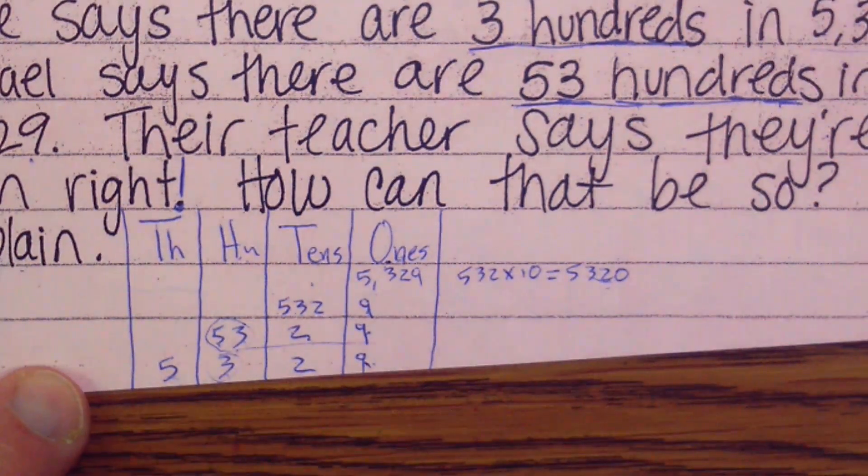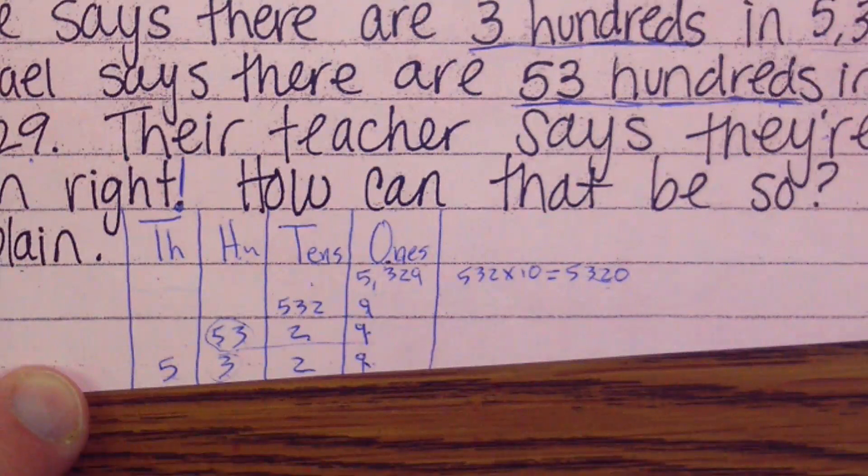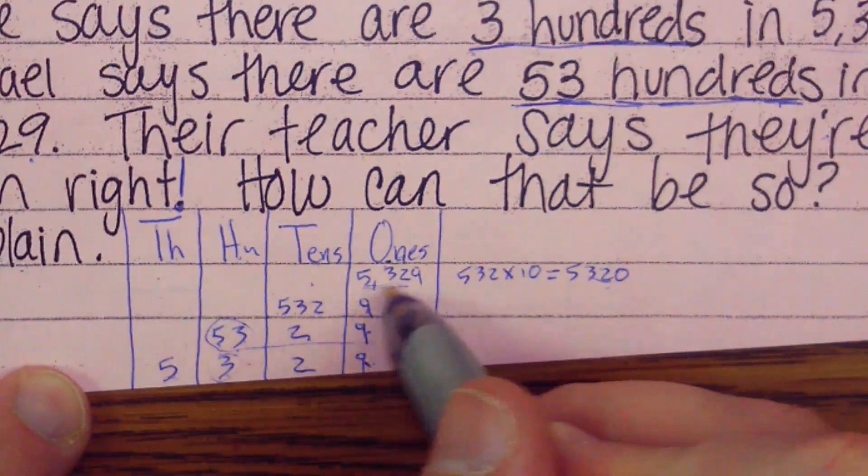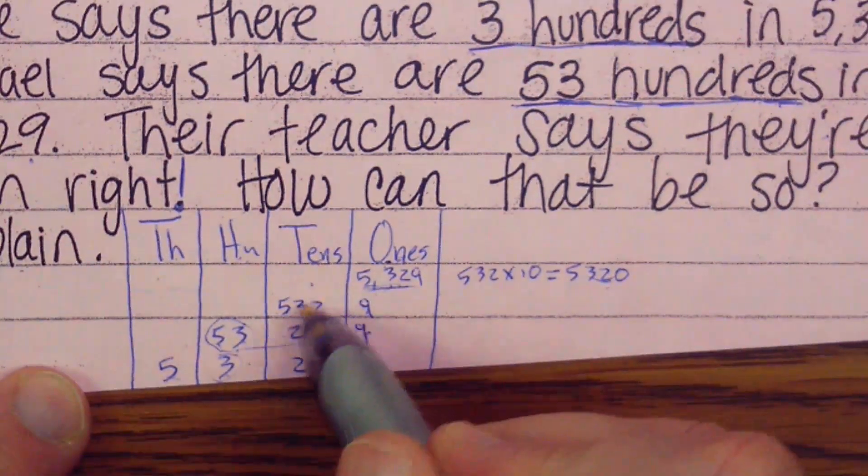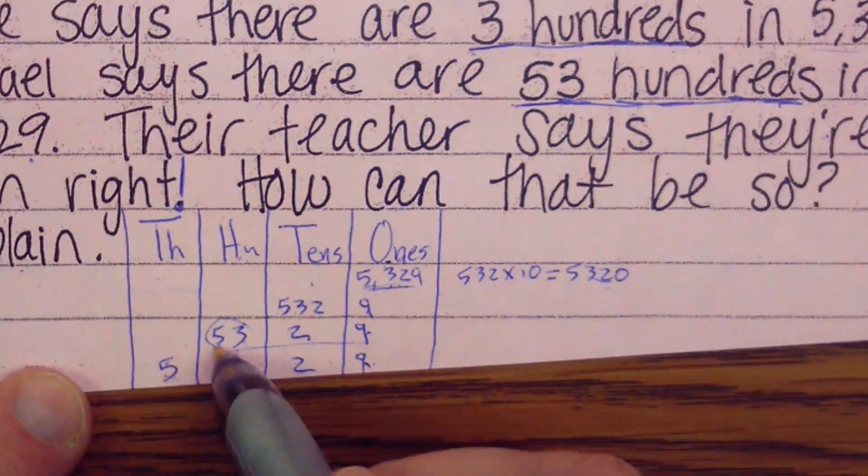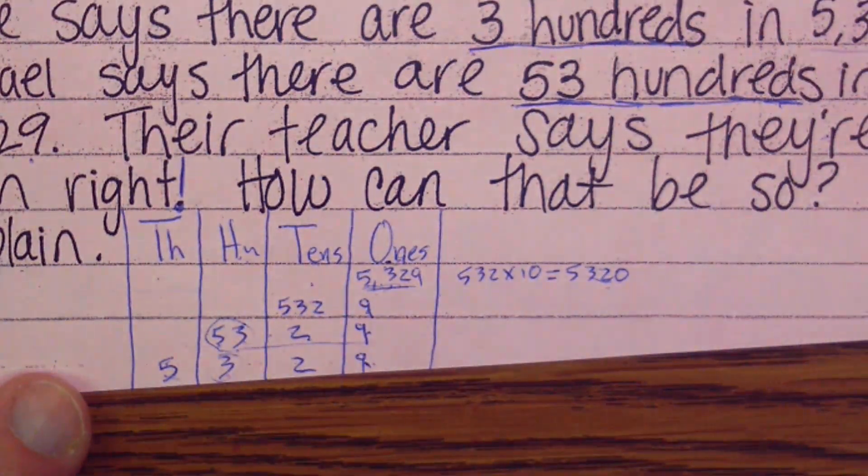That is a tricky, tricky math problem. But I tell you what, start easy. Start counting by ones and then shift your number over. Either way, you're going to get 5,329.